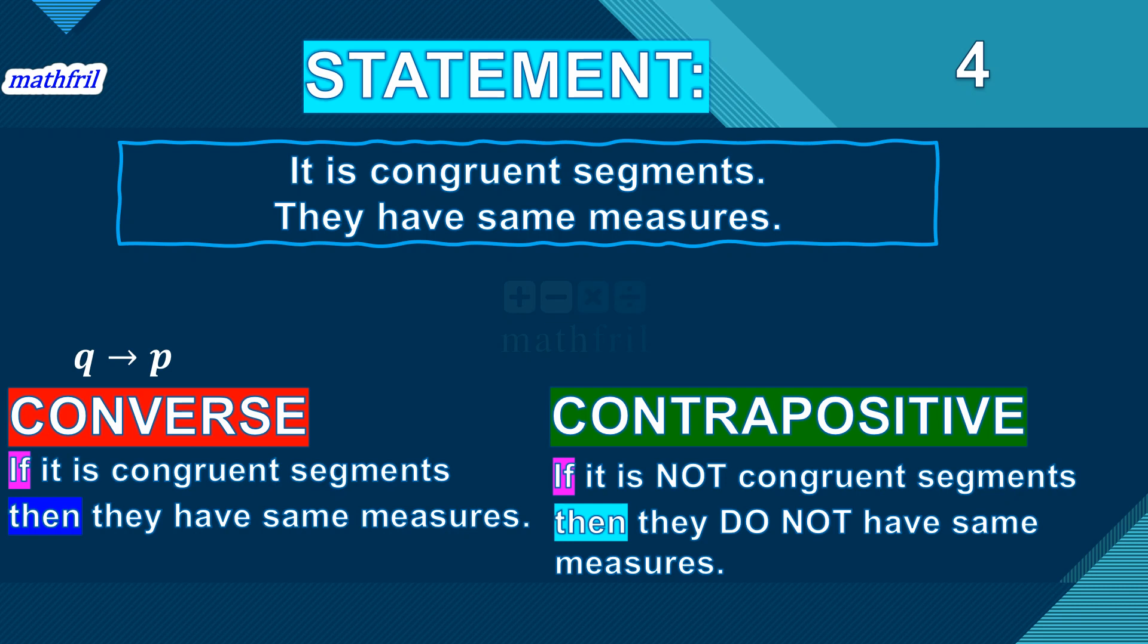As you can see, if it is congruent segment, then they have the same measures. And it is true as well. If it is not congruent segment, then they do not have the same measures. So, they have the same meaning and true statements, true value.